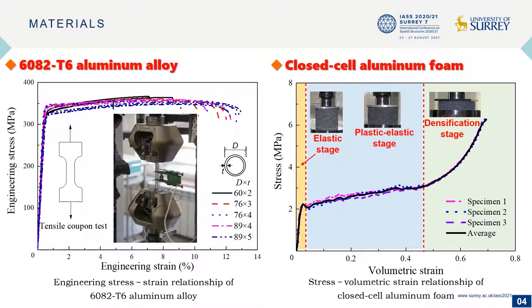The material properties were obtained by experiments. Tensile tests for aluminum alloy and extra compressive tests for aluminum foam were conducted. The energy absorption ability of the aluminum foam is improved when it reaches the densification stage.